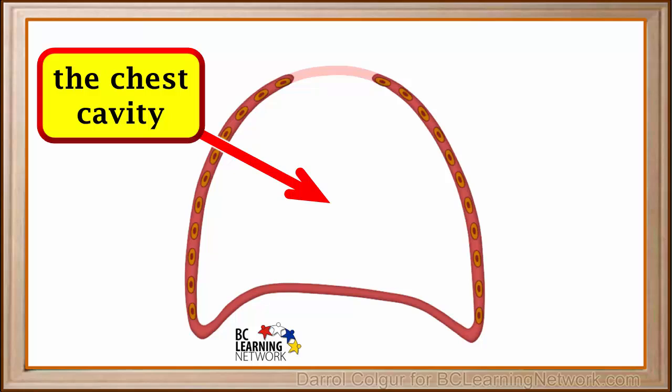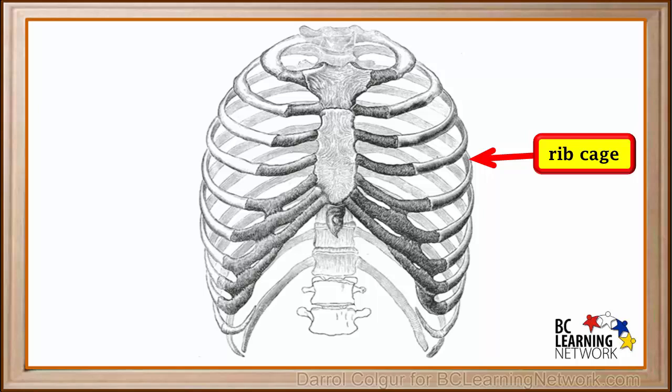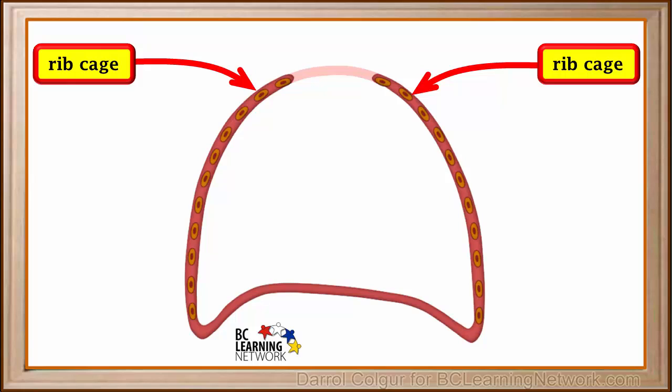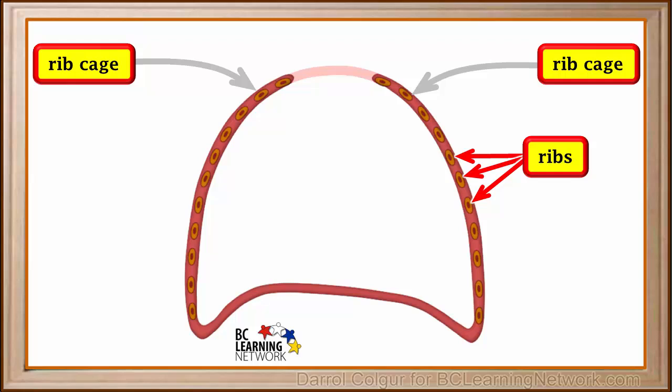We'll focus on what happens inside the chest cavity. Here is a drawing of the ribcage which surrounds the chest cavity. Here we'll show you a simplified diagram of this ribcage. We'll show you the ribs as if they were cut through here. This is called a cross section.